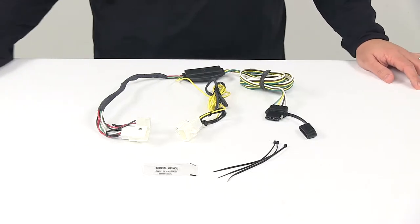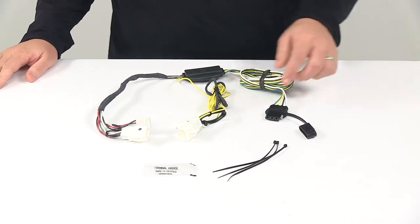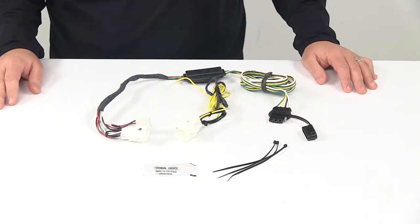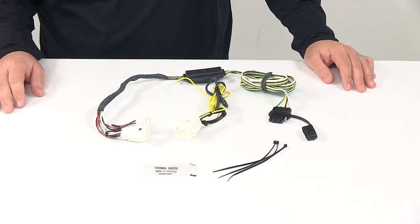Today we're taking a look at the Hopkins plug-in simple vehicle wiring harness with a four-pole flat trailer connector. This unit provides a four-way flat connector at the back of your vehicle to power your trailer signal lights.